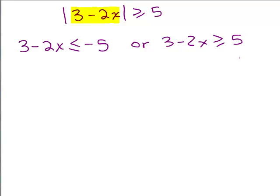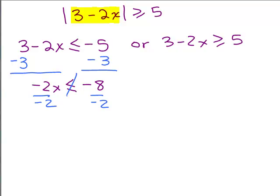Now I have to solve these two. How about subtracting 3 from both sides to begin with? So I get negative 2x is less than or equal to negative 8. And now to solve this inequality, I'm going to have to divide by negative 2. But remember what happens when you multiply or divide by a negative? It switches the inequality sign, so this is going to change to greater than or equal. So I get x is greater than or equal to 4.